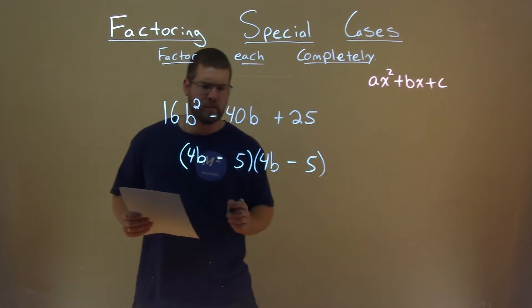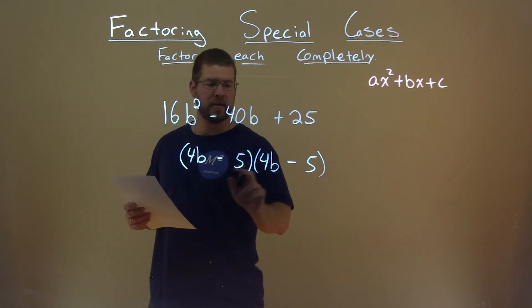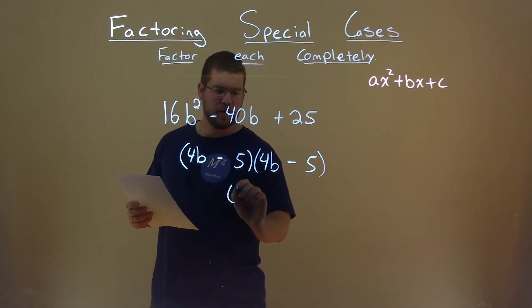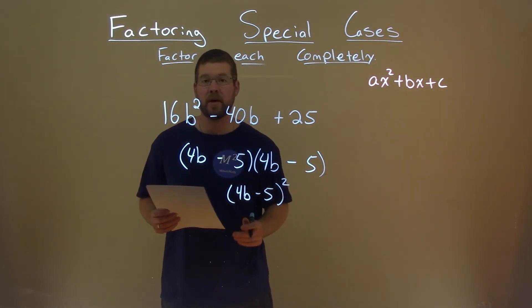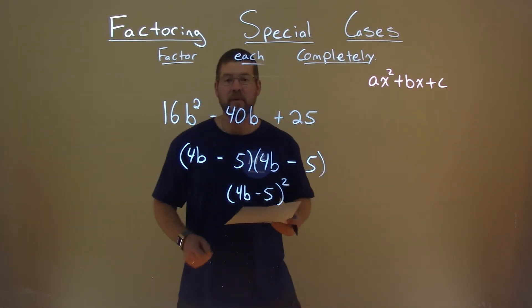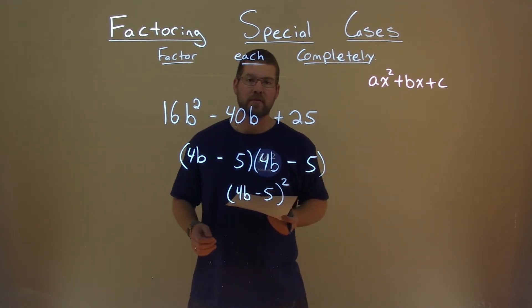Well, we actually can write it in simpler form. Same thing written out here. Let's go simplify it down. Now, 4b minus 5, and we can write that all squared. Same thing written twice. So our final answer is just 4b minus 5 all squared.